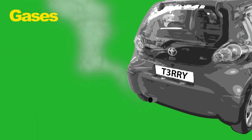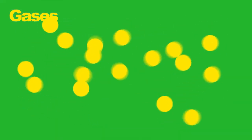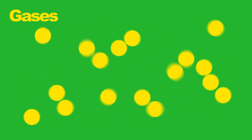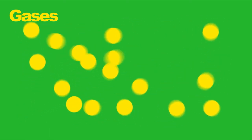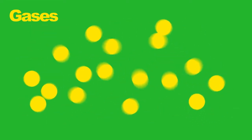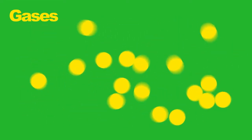Gases. In a gas, the particles are not close and are arranged randomly. Remember, the particles are constantly moving. So in a gas, because the particles are far apart, they move around very freely and they move around a lot. The forces between the particles are tiny compared with liquids.